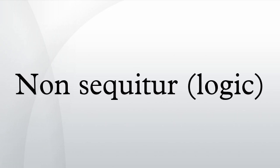The fallacy of the undistributed middle takes the following form: All Zs are Bs. Y is a B. Therefore, Y is a Z. It may or may not be the case that all Zs are Bs, but in either case it is irrelevant to the conclusion. What is relevant to the conclusion is whether it is true that all Bs are Zs, which is ignored in the argument.